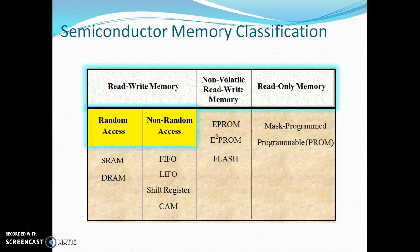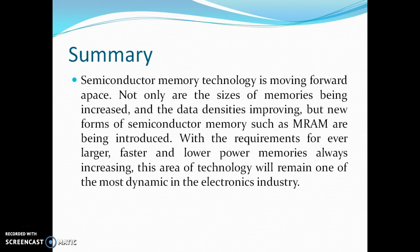Semiconductor memory classification includes read-write memory, which is further classified as random access (SRAM, DRAM) and non-random access (FIFO, LIFO, shift register, CAM). It is also classified as non-volatile read-write memory including EPROM, EEPROM, and flash memory, as well as read-only memory including mask-programmable ROM and PROM. In summary, semiconductor memory technology is moving forward — not only are memory sizes increasing and data density improving, but new forms such as MRAM are being introduced. With ever-larger, faster, and lower-power memories always in demand, this area will remain one of the most dynamic in the electronics industry.